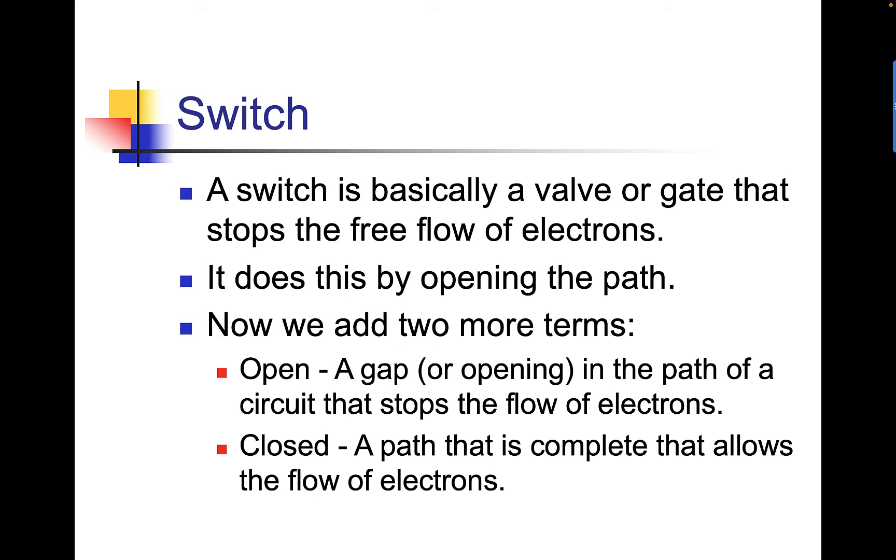A switch is basically a valve or a gate that stops the free flow of electrons. It does this by opening the path. Now we add two more terms. Open is a gap or opening in the path of a circuit that stops the flow of electrons. Closed is a path that is complete, that allows the flow of electrons.